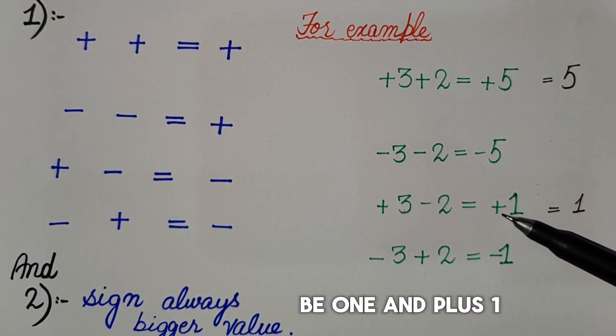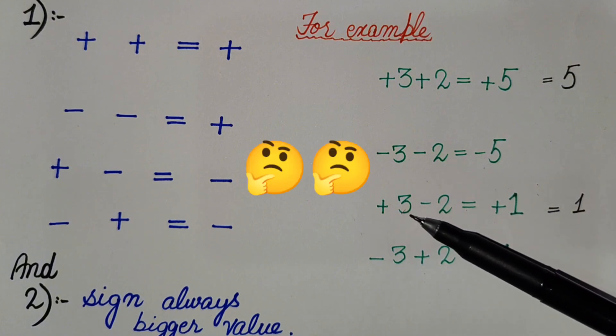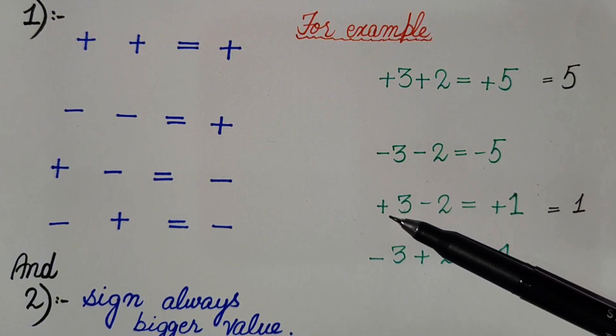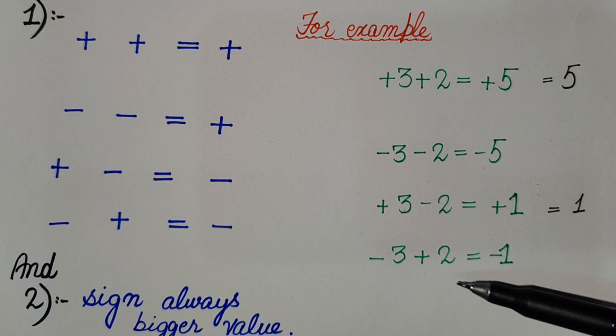And plus one, why plus? Because bigger value is three, three have plus sign. And similarly, minus three plus two.